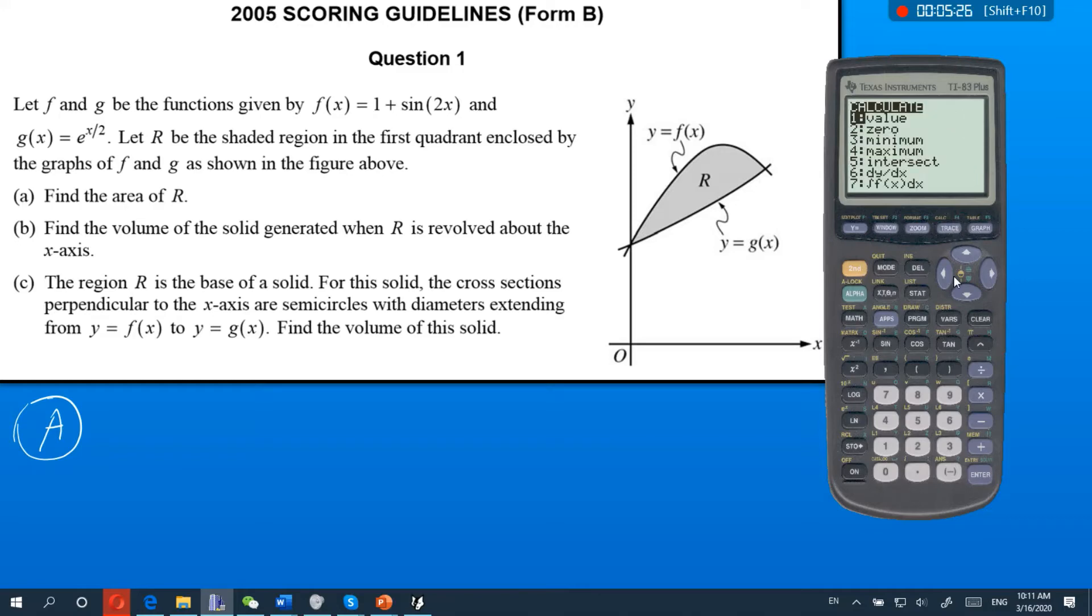Okay, so there's our two intersection points we need. I'm just going to hit second, calculate, intersect. It's going to ask me for a first curve. I'm going to hit enter, second curve, hit enter, and then guess. I'm going to move the cursor over so I'm a little bit closer to this intersect and hit enter. And it should give us this intersection here.